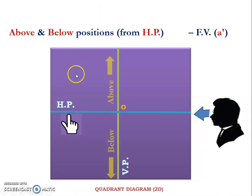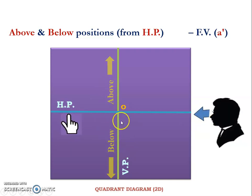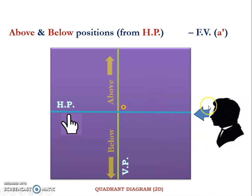Now let us move on to the shortcut method. To represent or to locate the above or below positions, we need the horizontal plane as reference. The above and below positions can be visualized only in the front view, and the front view must be represented using small letter with dash.